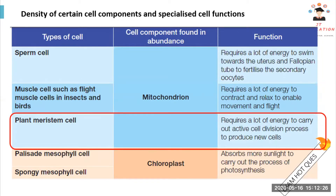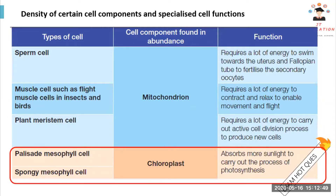Plant meristem cells undergo cell division, and this process requires a lot of energy for one cell to split into two cells. So they have a lot of mitochondria at the plant meristem cell.